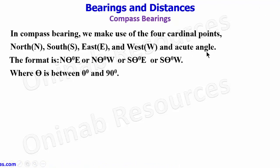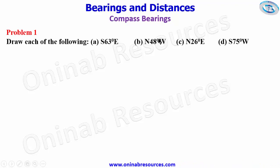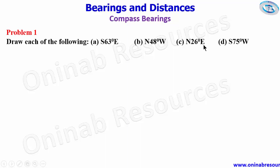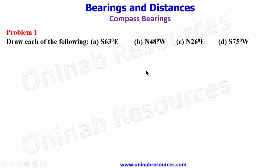or south theta degrees east, or south theta degrees west, where theta is between 0 degrees and 90 degrees — that is the definition of the acute angle. This is an introduction to bearings and distances. These are the formats in which compass bearings are represented. It must start with either south or north, and after the angle it must be followed by east or west, otherwise you are not doing bearing at all.